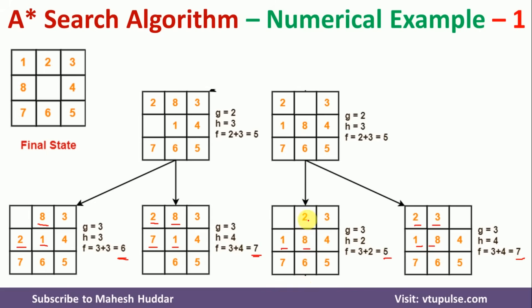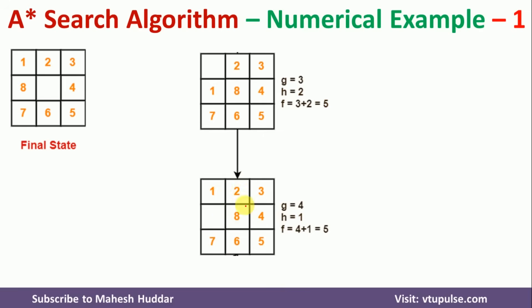From this node, moving 2 back to the left gives the same state, so the only valid move is upward. This node is at depth 4, so g = 4. Counting misplaced tiles: 1, 2, 3, 4, 5, 6, and 7 are all at the correct location — only one tile is misplaced. So h = 1, and f = 4 + 1 = 5. This is the minimum among available options.